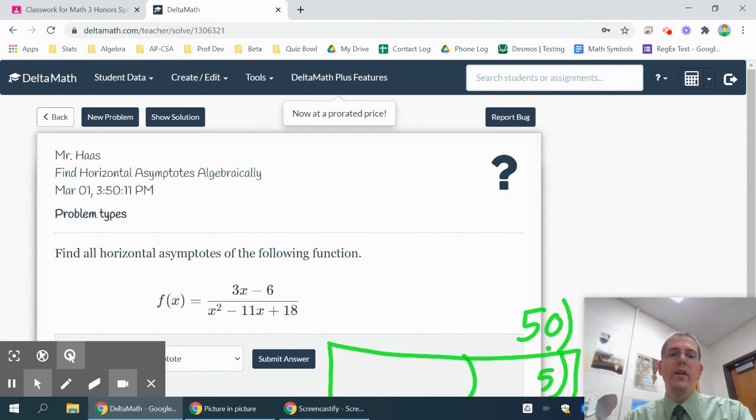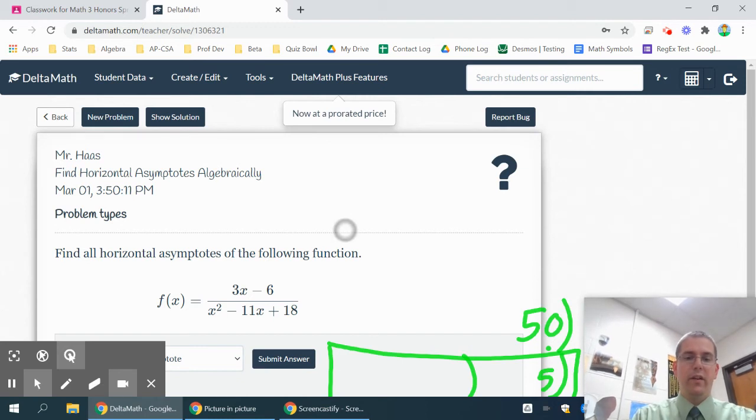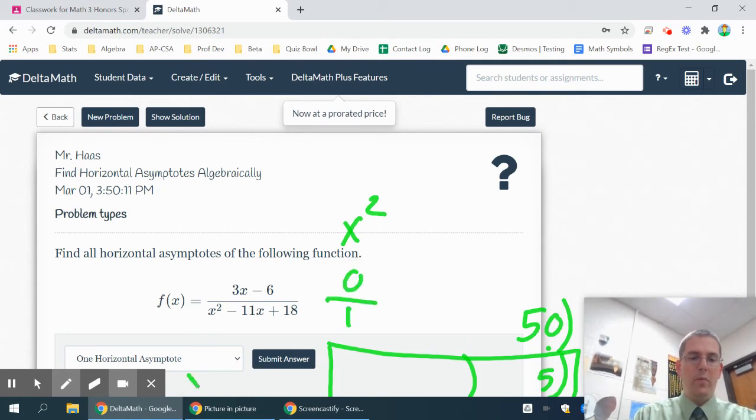Okay, when I'm looking at horizontal asymptotes, I'm looking at the highest power of x in standard form. So the highest power of x in this case is an x squared. So when I look at this problem, I have 1x squared on the bottom and no x squareds on top. So 0 minus 1 would be 1 horizontal asymptote of y equals 0.